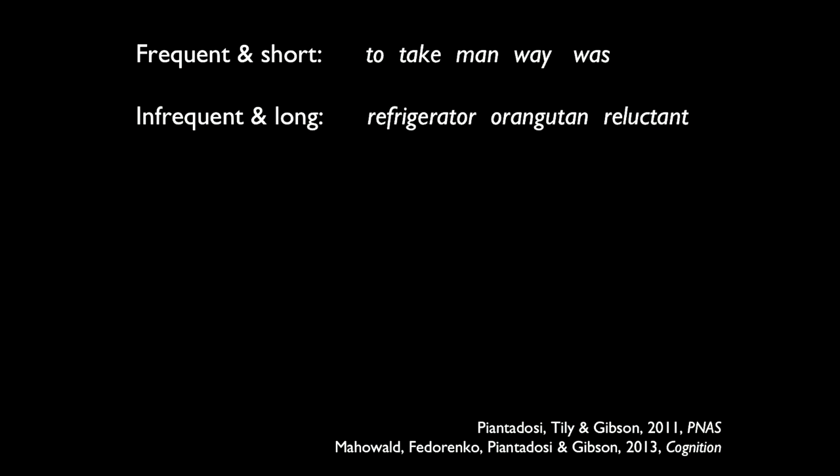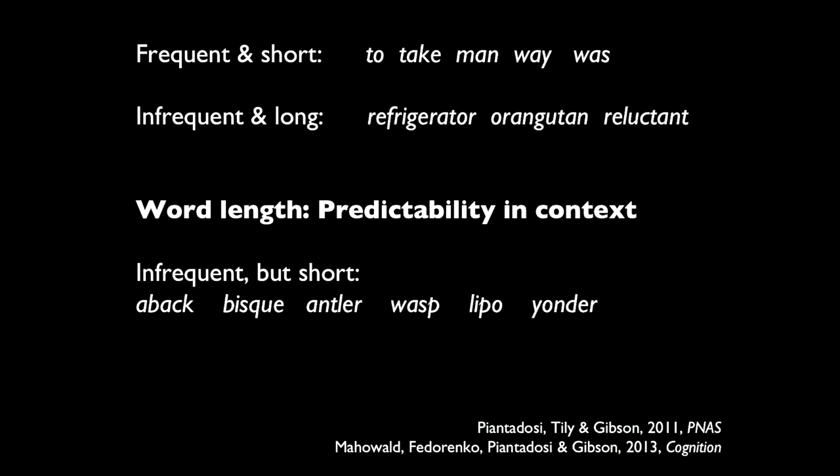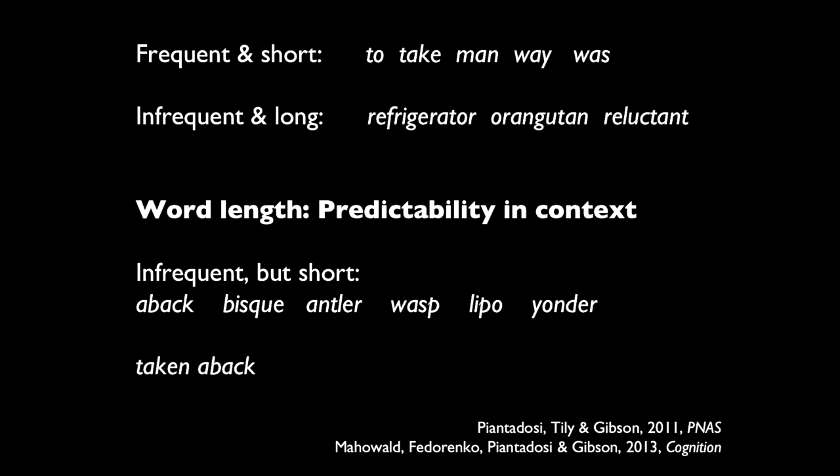In my group we explored an even stronger prediction of the information-theoretic account — that not just frequency predicts word length, but predictability in context. You can have a very low-frequency word which might be short if it occurs in the same kinds of contexts over and over again. Words like 'aback,' 'bisque,' 'antler,' 'wasp,' 'lipo,' or 'yonder' — very low frequency and short. 'Aback' almost always occurs after a verb like 'take' or 'taken.' 'Yonder' almost always occurs after a word like 'over.' We can use the predictability of the context to keep the code short.